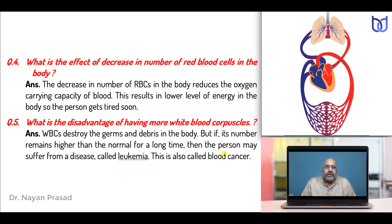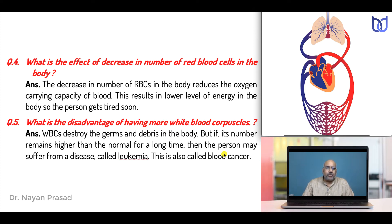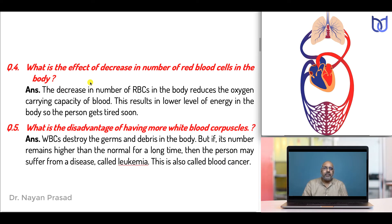What is the effect of decrease in number of red blood cells in the body? The decrease in number of RBCs in the body reduces the oxygen carrying capacity of blood. This results in a lower level of energy in the body, so the person gets tired soon. Remember, RBCs contain hemoglobin which has great affinity with oxygen.